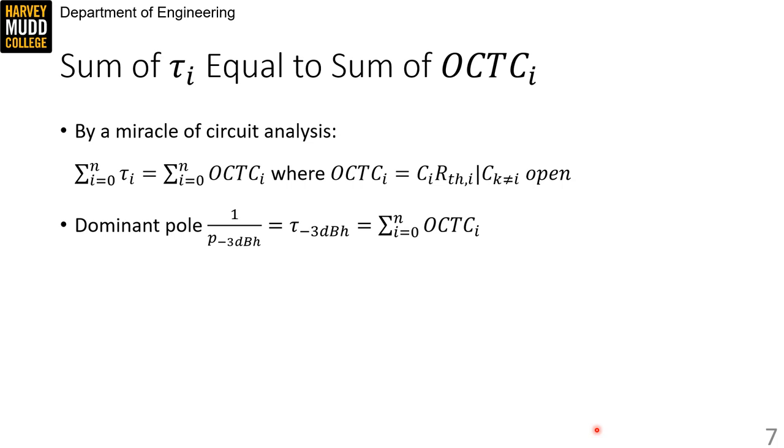This second bullet here just reiterates that this sum of τi is equal to the 3dB corner that we're trying to estimate. So if we knew the sum of these open circuit time constants, then we can estimate our bandwidth really effectively.